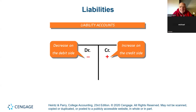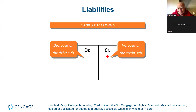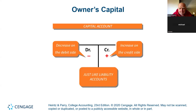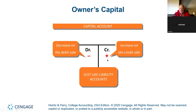Rule number two: Liabilities. Assets equal liabilities plus equity. If assets have a normal debit balance, liabilities and equity are going to have a normal credit balance. Liabilities go up with a credit. You buy something on account — you're going to pay this guy in a month or so — you are going to debit machinery or whatever you bought, and credit the liability to increase it. Capital as well would have a normal credit balance. Equity increases with a credit.